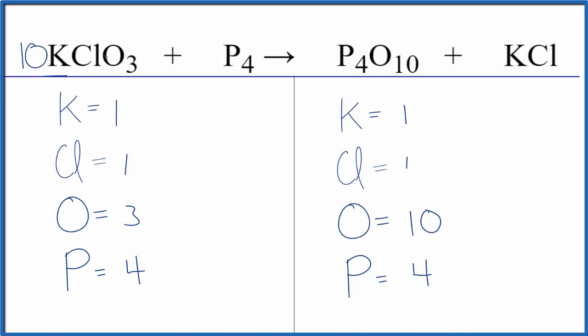So for the oxygens 3 times 10 that'll give me 30 of those which will be helpful because we could put a 3 here 3 times 10 that would give us 30 of those. That balances those.